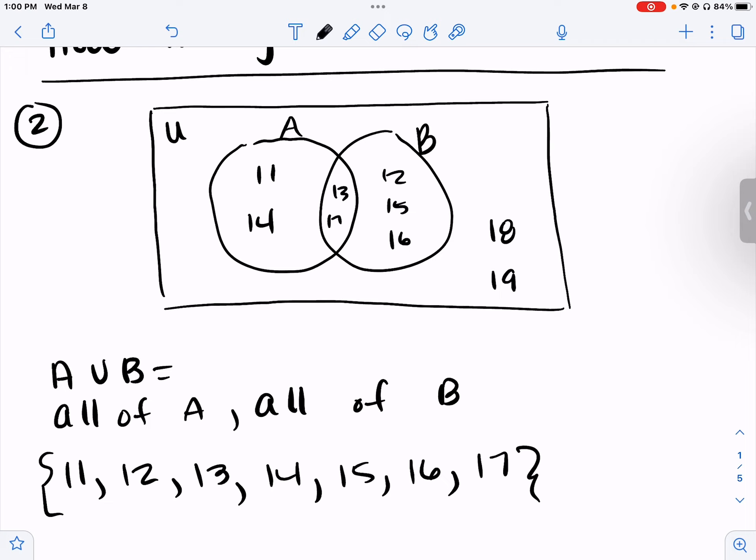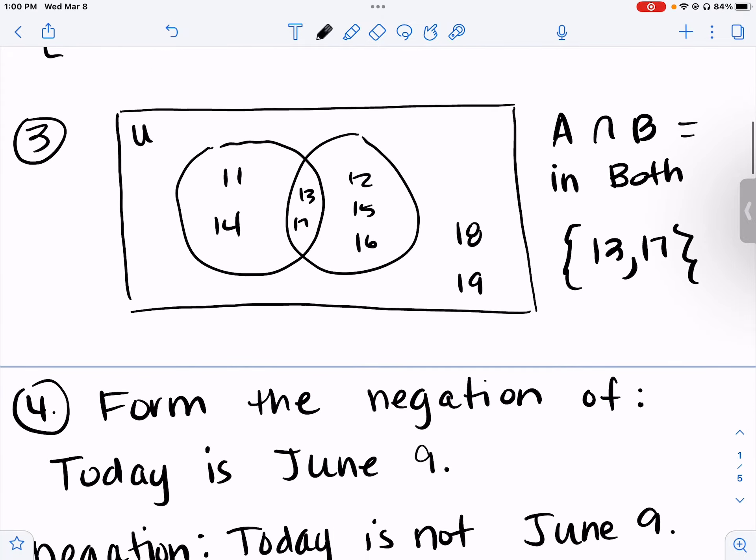So we have what's in A along with B would be 11, 12, 13, 14, 15, 16, 17. A with the upside down U and B is the intersection, and that means what's in both A and B.